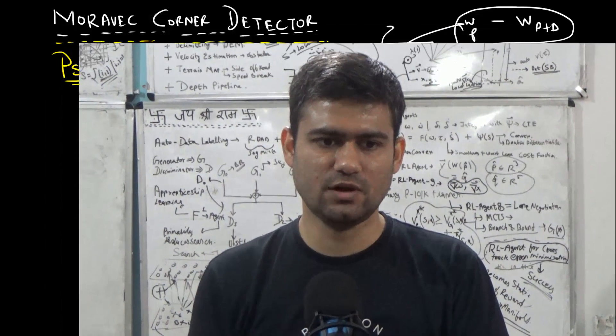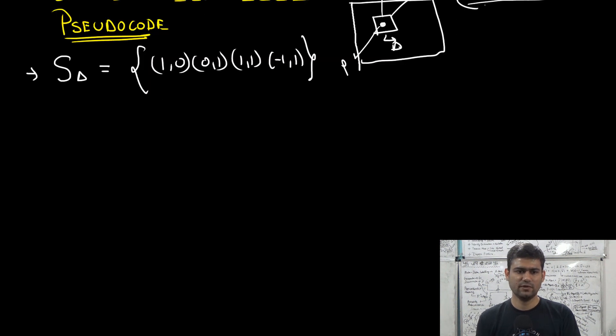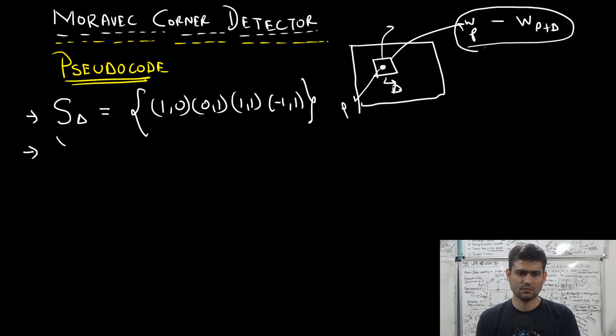We will just summarize everything that we have learned so far. We have a set S_delta which contains all the shift values. This is a set of (1,0), (0,1), (1,1), and (-1,1). Now we compute a vector of errors, eta which is a vector of individual errors E_delta.